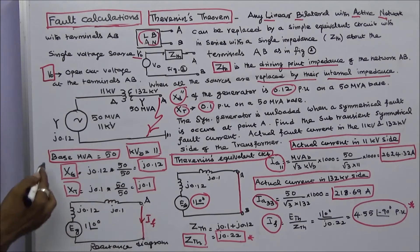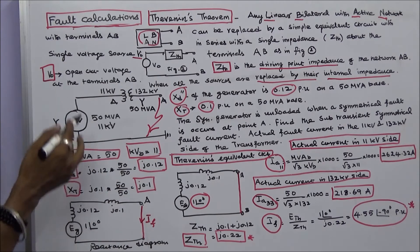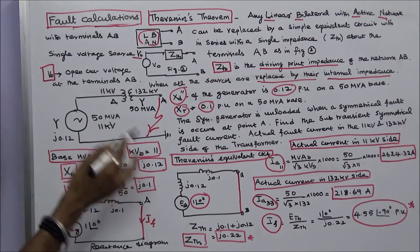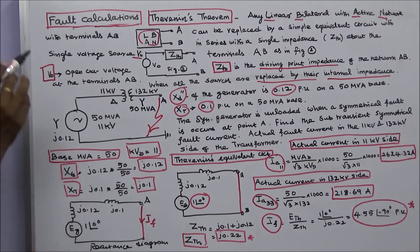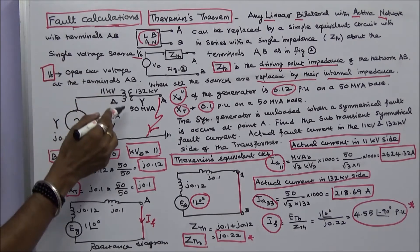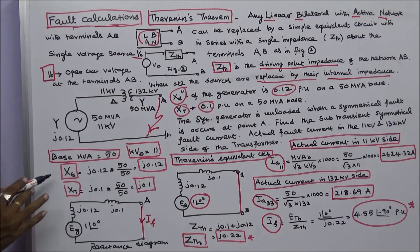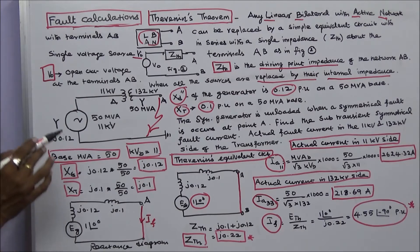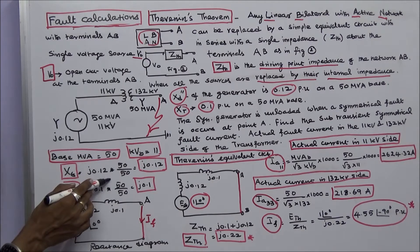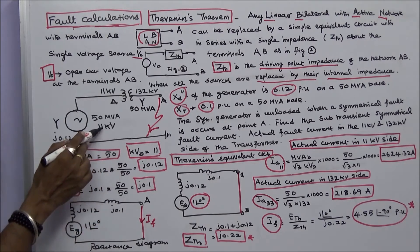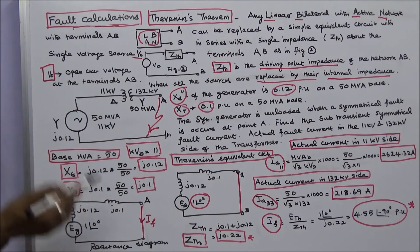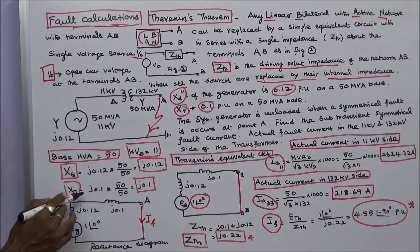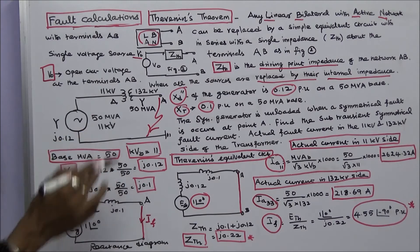First step, we choose base MVA. Base MVA is equal to 50. Base kV is equal to 11. Next, I calculate the per unit reactance of the generator and the transformer. Per unit reactance of the generator is equal to actual reactance j0.12 multiplied by actual MVA over base MVA, which is 50 over 50. Therefore reactance of the generator is j0.12. Similarly, reactance of the transformer is j0.1 into 50 by 50, that is equal to j0.1.